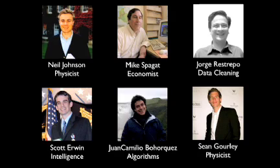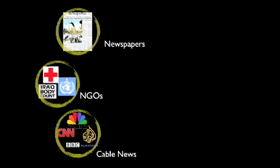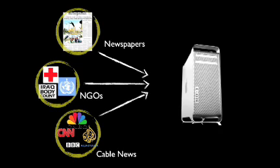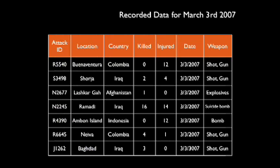We started bringing a team together — an interdisciplinary team of scientists, economists, mathematicians. And we brought these guys together and we started to try and solve this in three steps. The first step was to collect — we used 130 different sources of information, from NGO reports to newspapers and cable news. We brought this raw data in, filtered it, and extracted the key bits of information to build the database. That database contained the timing of attacks, the location, the size, and the weapons used.